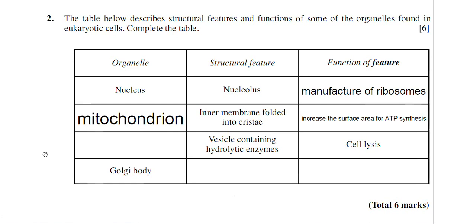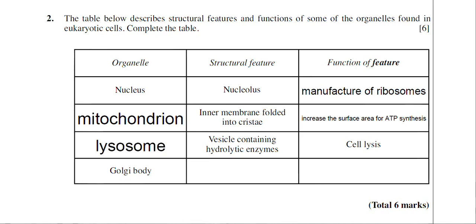Moving on to the next row, we're given the structural feature: a vesicle containing hydrolytic enzymes. The function of the feature is cell lysis. There's only one organelle that contains hydrolytic enzymes, and that would be the lysosome.